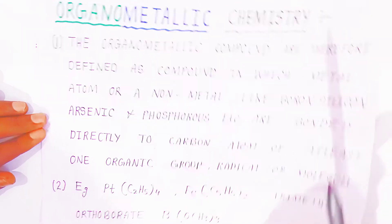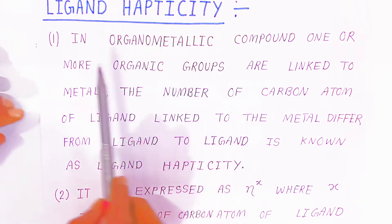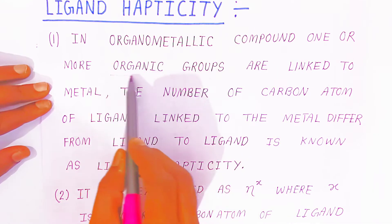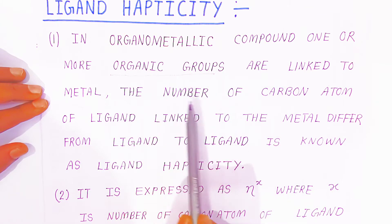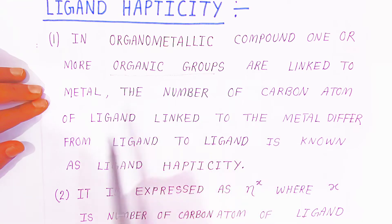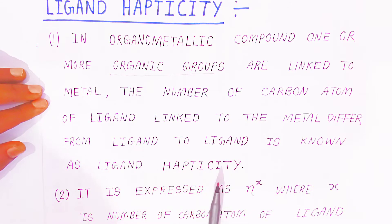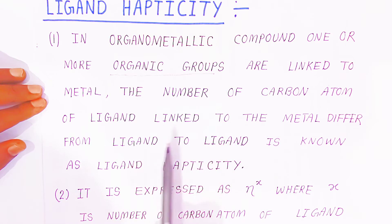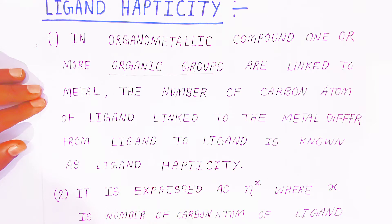Now we are going to see ligand hapticity. In organometallic compounds, one or more organic groups are linked to the metal. The number of carbon atoms of the ligand linked to the metal differs from ligand to ligand — this is known as ligand hapticity. It is expressed as eta raised to x, where x is the number of carbon atoms of the ligand linked to the metal.